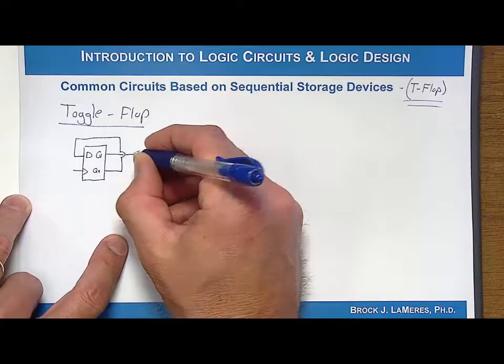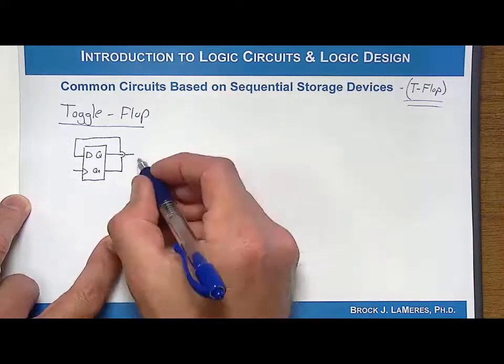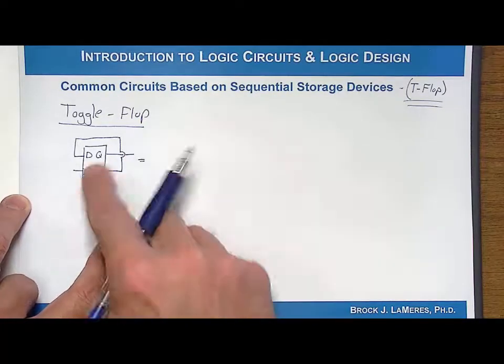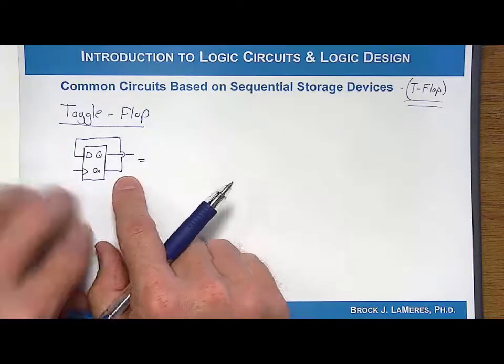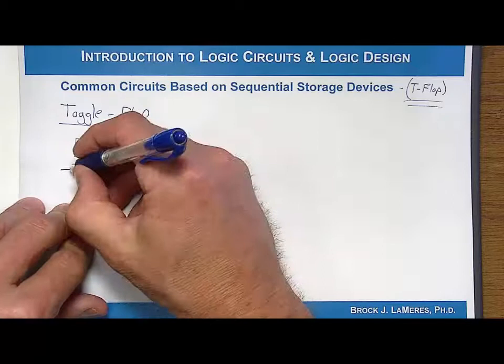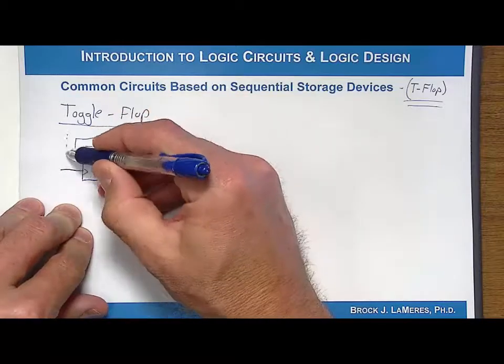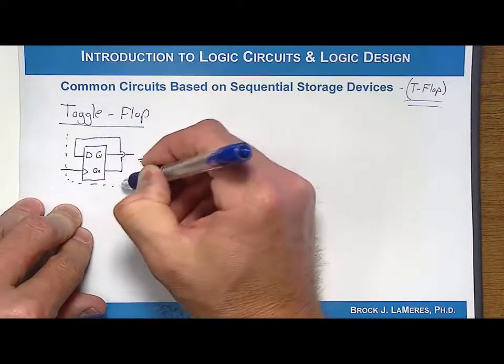So when you look at the toggle flop, this is a toggle flop, and there is no D input now. You've manually wired it in there. So you could actually draw a box around this.